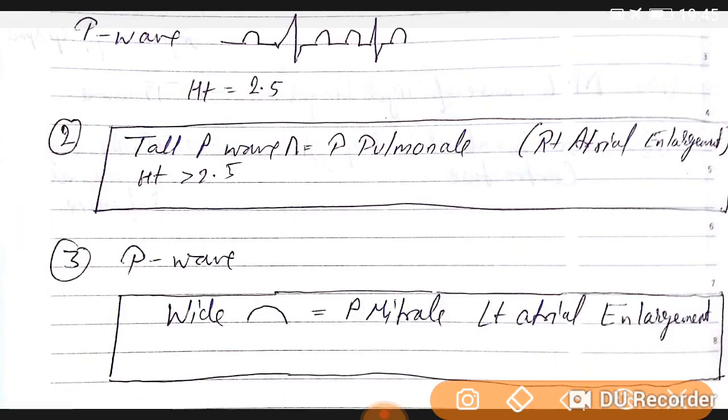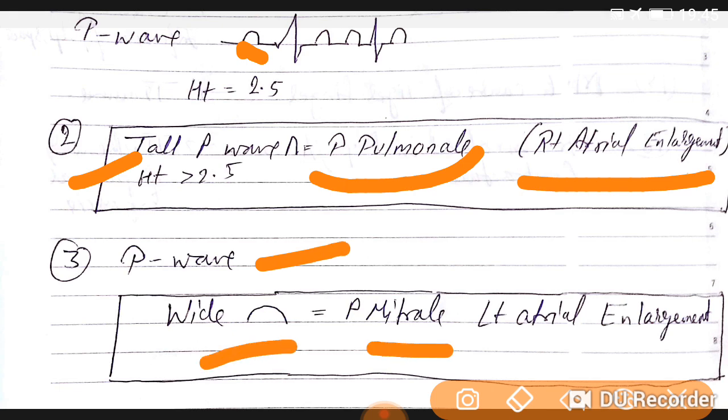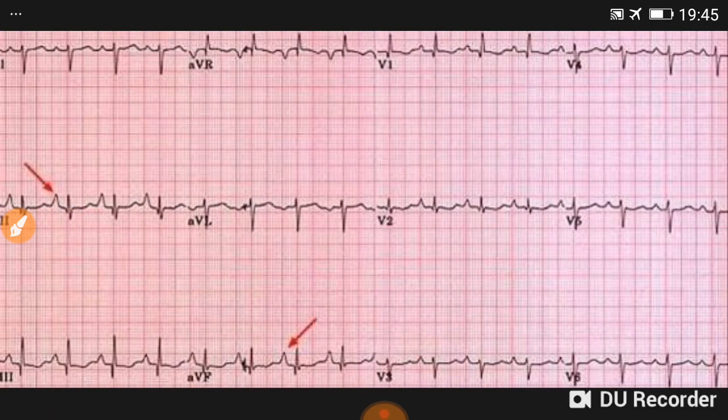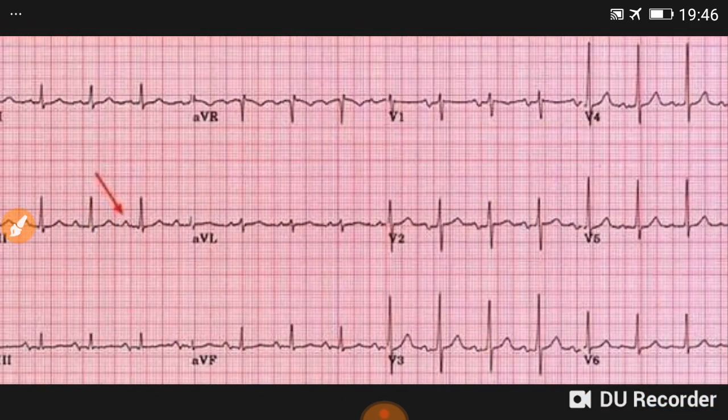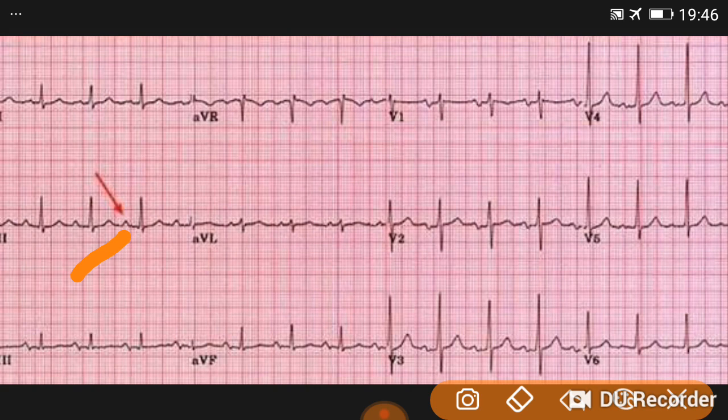Now about P wave. The P wave normal diameter and height is 2.5. If P wave height is more than 2.5, then it indicates P pulmonale or right atrial enlargement. When the P wave is wide, we call it P mitrale or it indicates left atrial enlargement. This ECG indicates tall P wave, so it's right atrial enlargement or P pulmonale due to tall P wave more than 2.5.